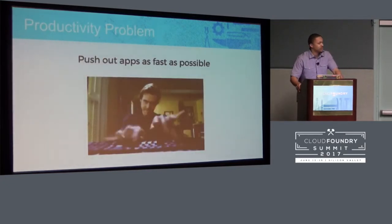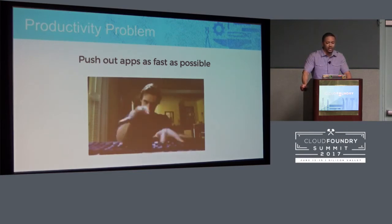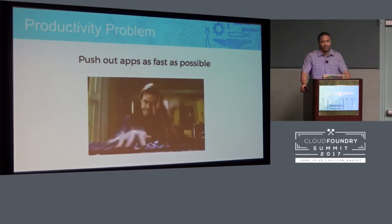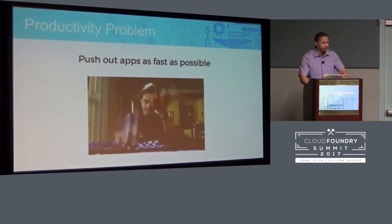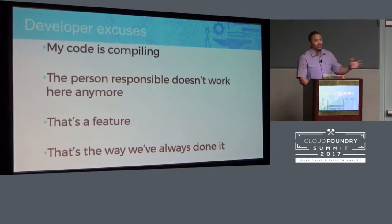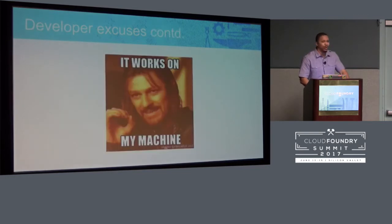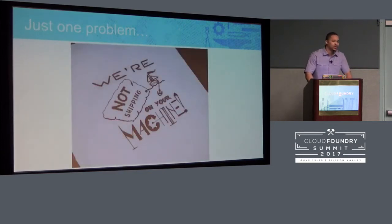We have a productivity problem. Everywhere you work, you're told to push out apps faster. You can only develop at a certain pace, and I'm not talking about just coding faster. Getting the app to users is the real problem. I used to make excuses — my code is compiling, that's a classic. But my favorite was 'it works on my machine.' The only problem is we're not shipping my machine.